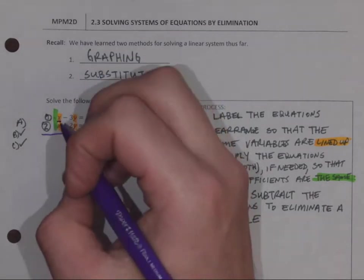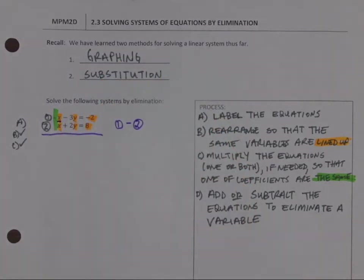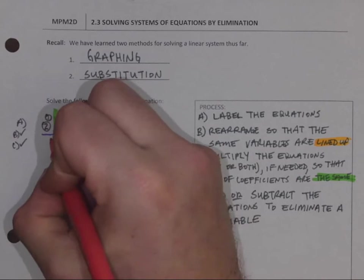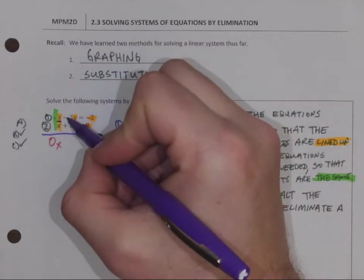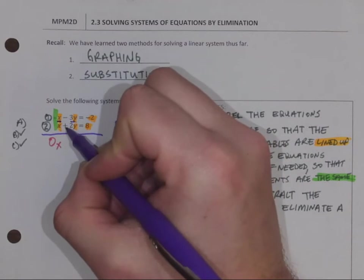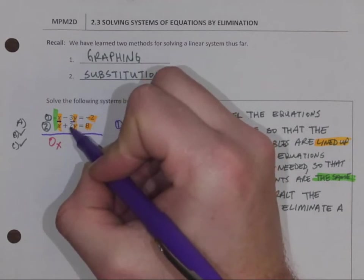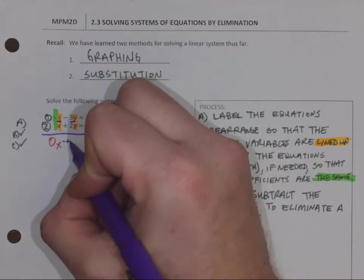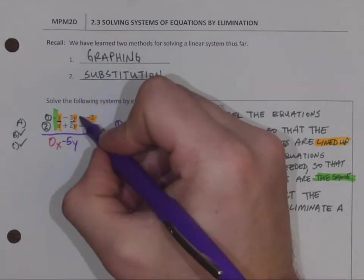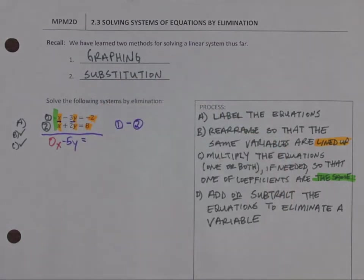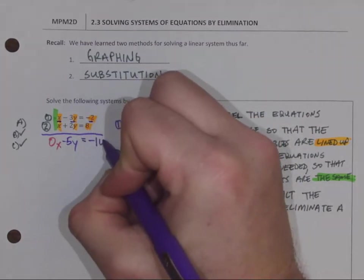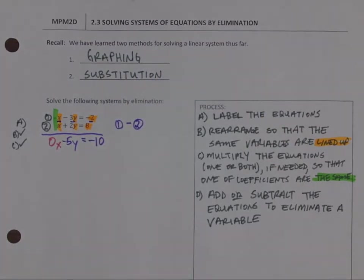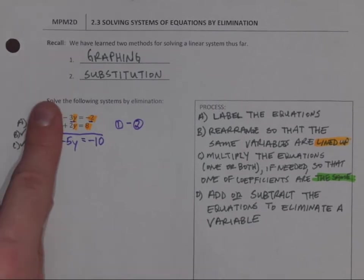That's going to mean negative 3Y take away positive 2Y, which is negative 3Y take away 2Y, which is negative 5Y's. Where the equal signs are lined up, they stay. And now it's negative 2, take away 8, which is negative 10. By adding or subtracting, I have now eliminated the X's.